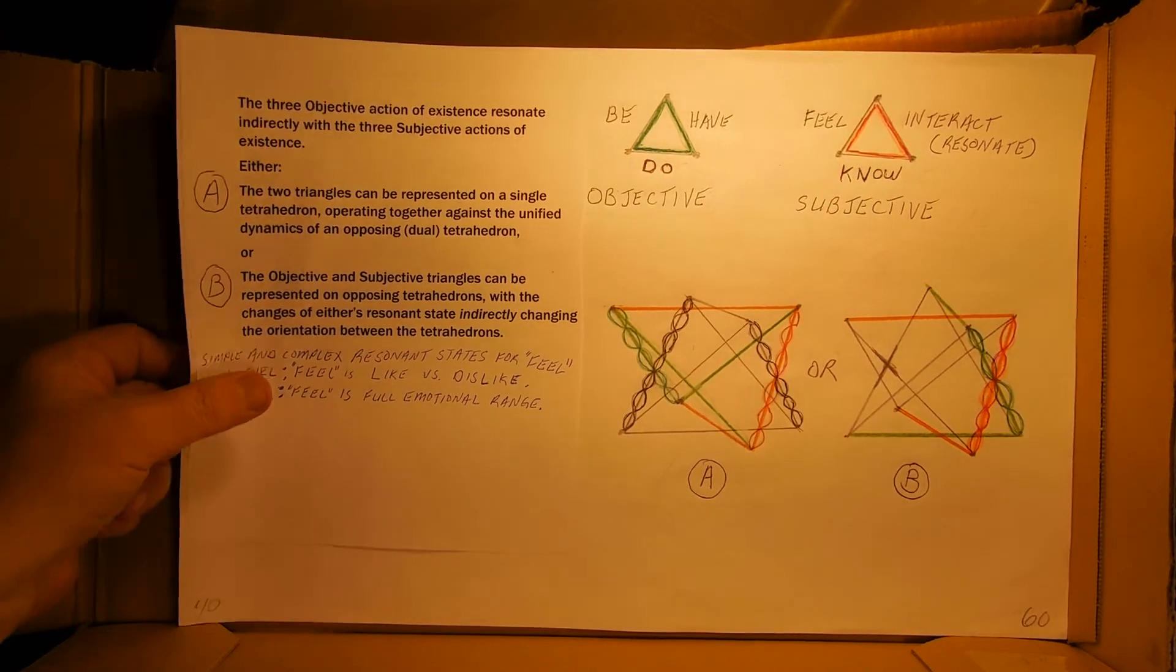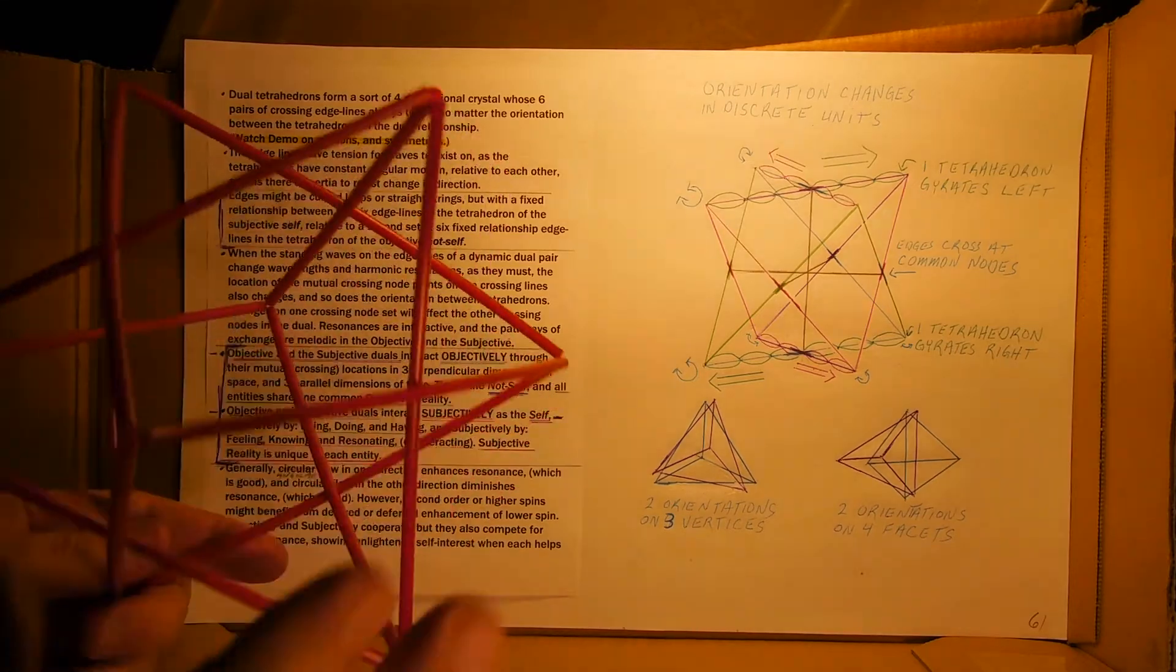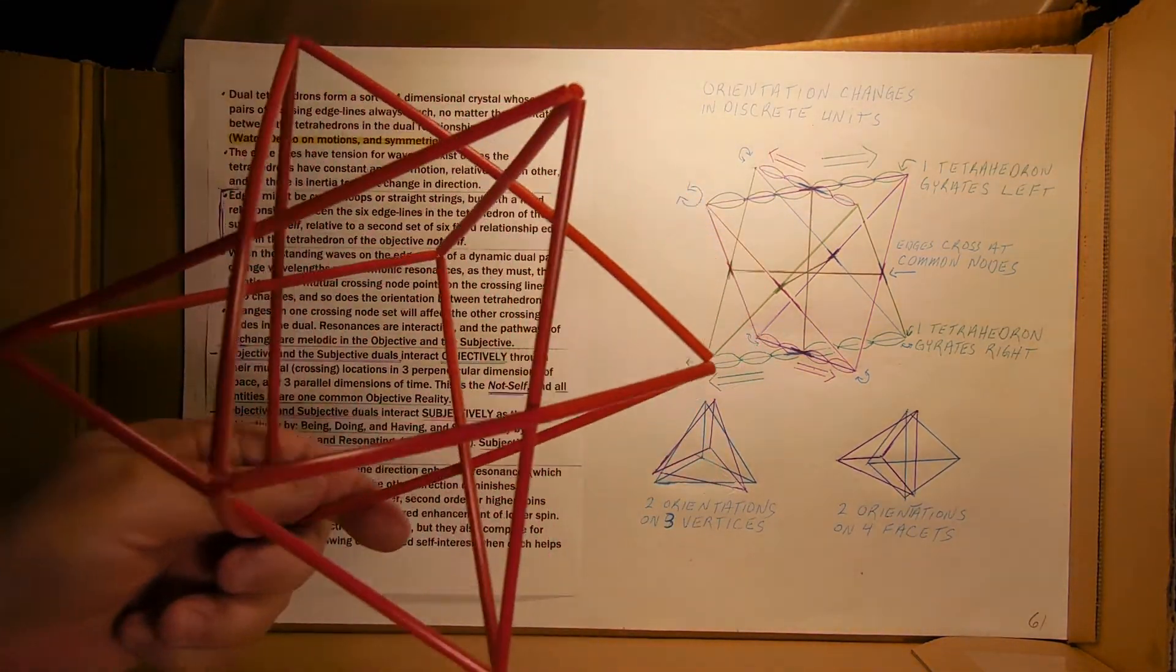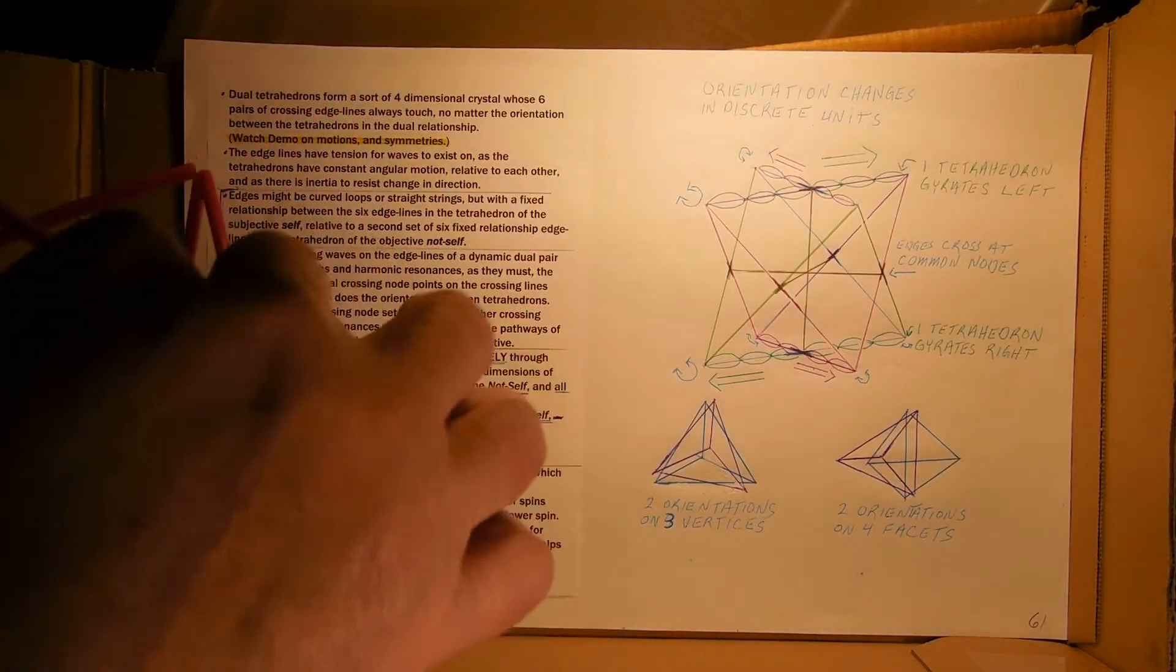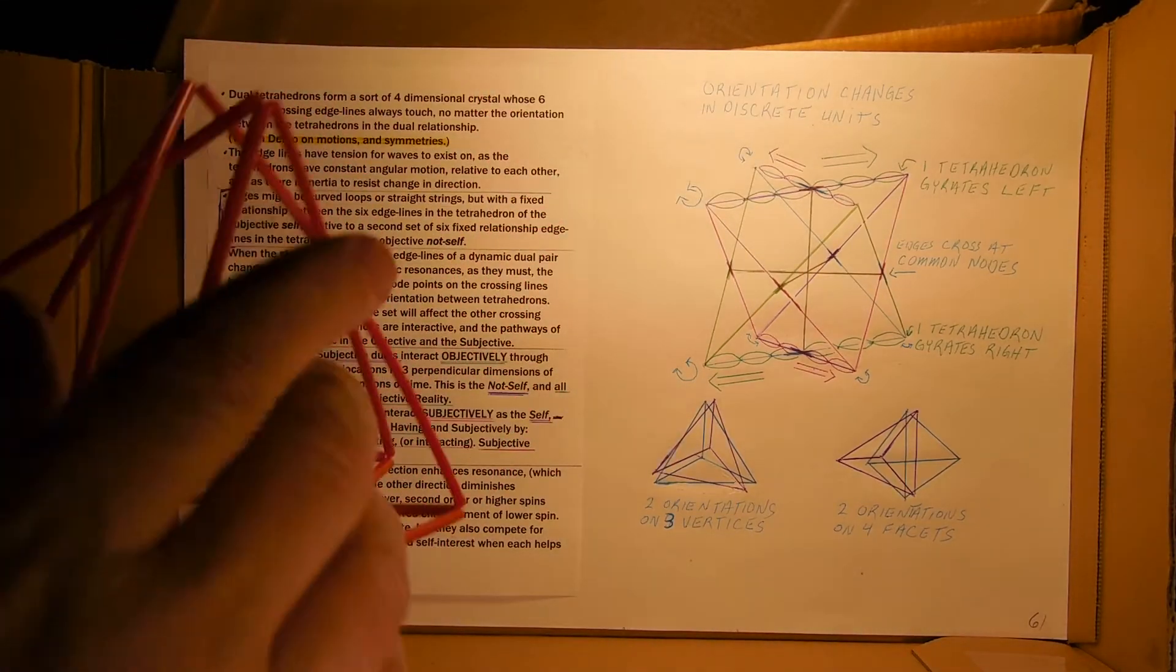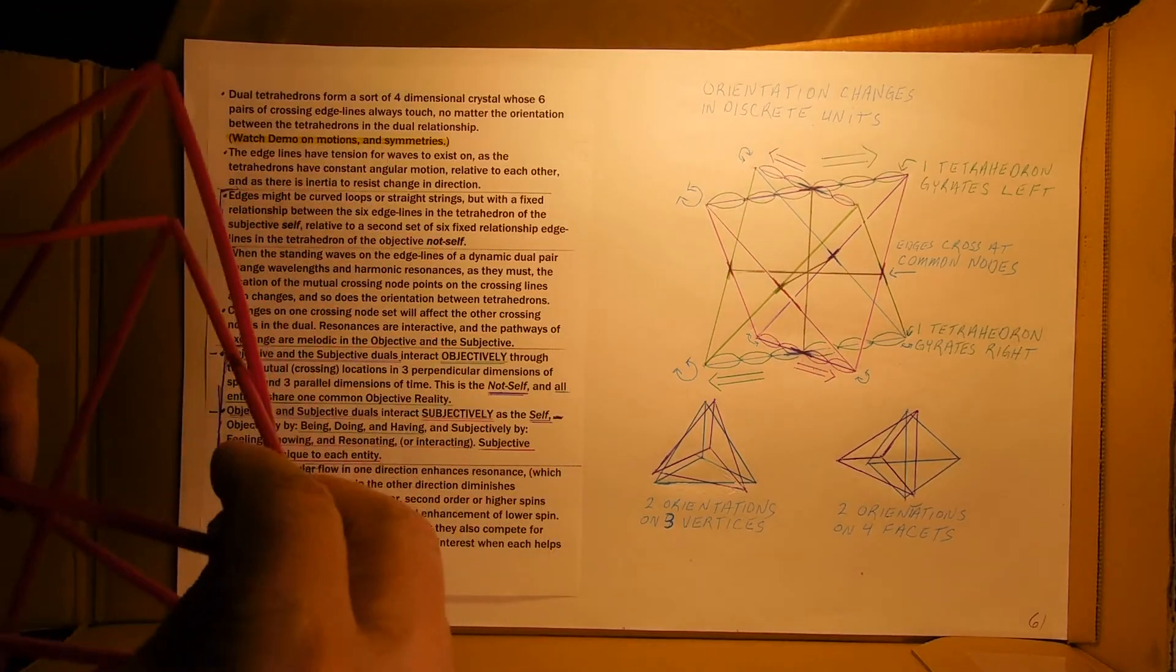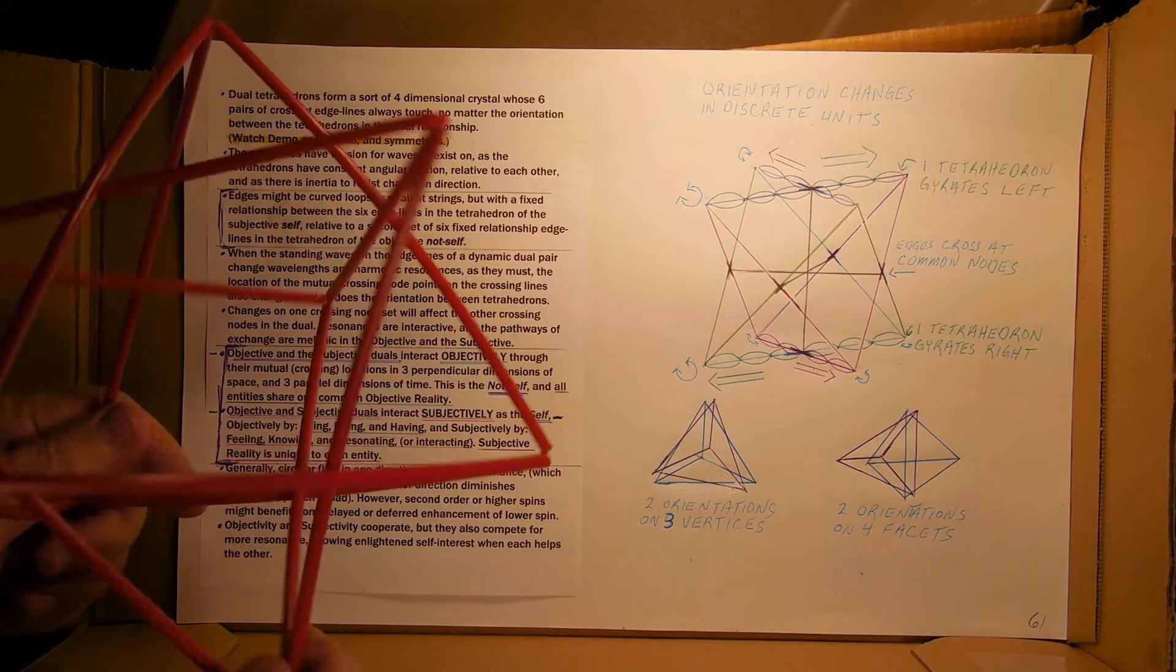And this is the dynamic model right here. You can see it as a square shape. You can also make it look triangular. It's the symmetry and no matter how you orient the two, they always touch on all six pairs of crossing lines. You can also make it become one in several ways, or you can turn it like this to where you get all sorts of different things.